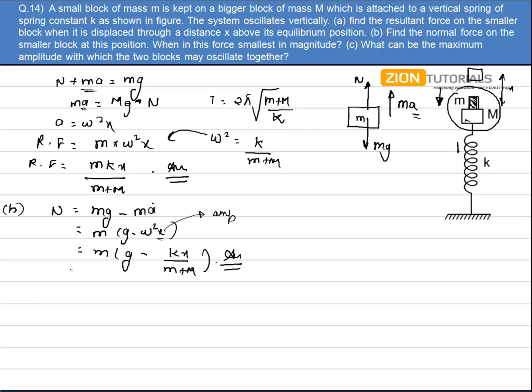So at extreme position, that is when the amplitude is maximum, normal force will be minimum.